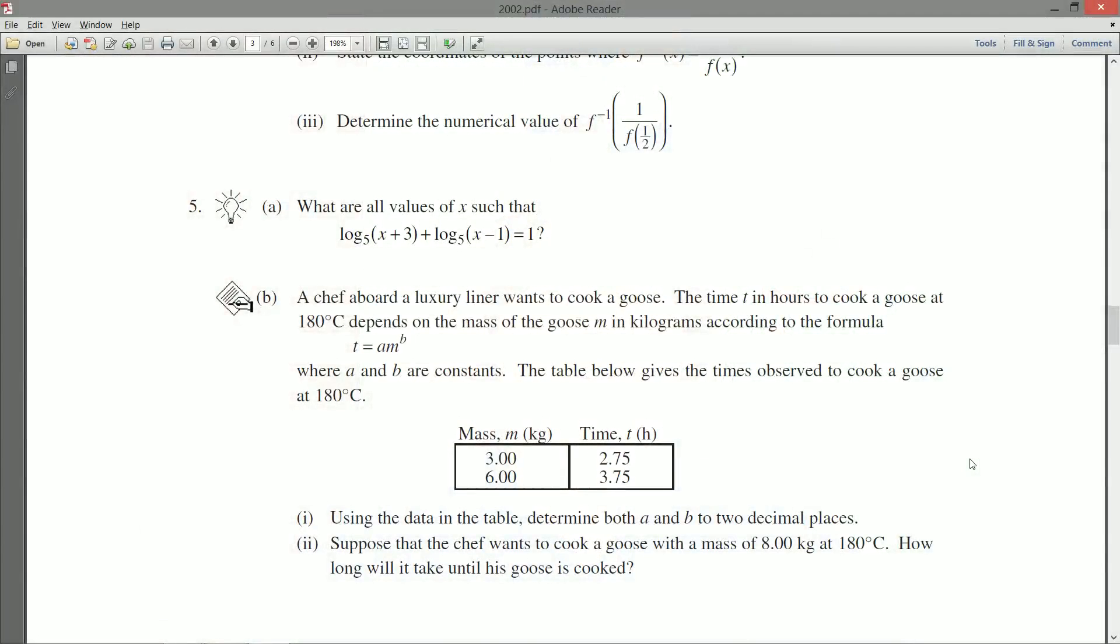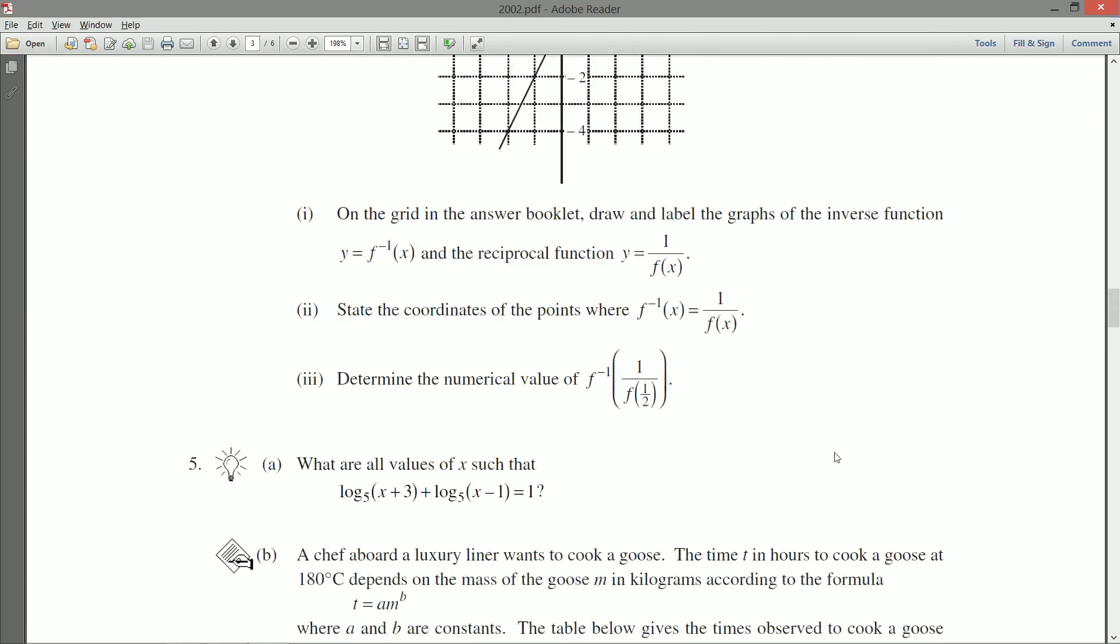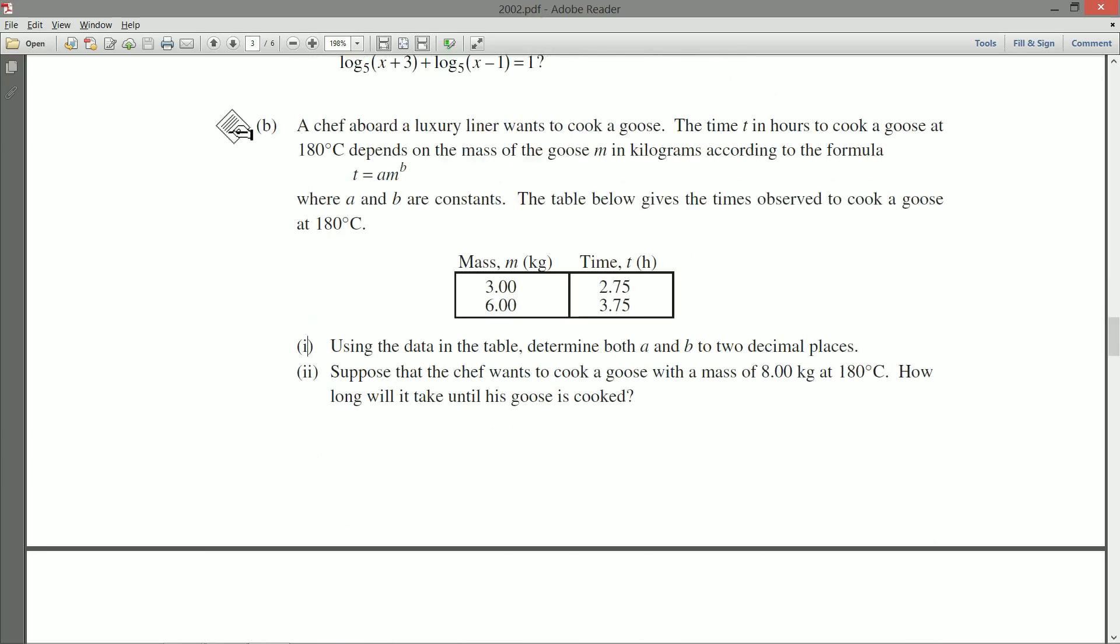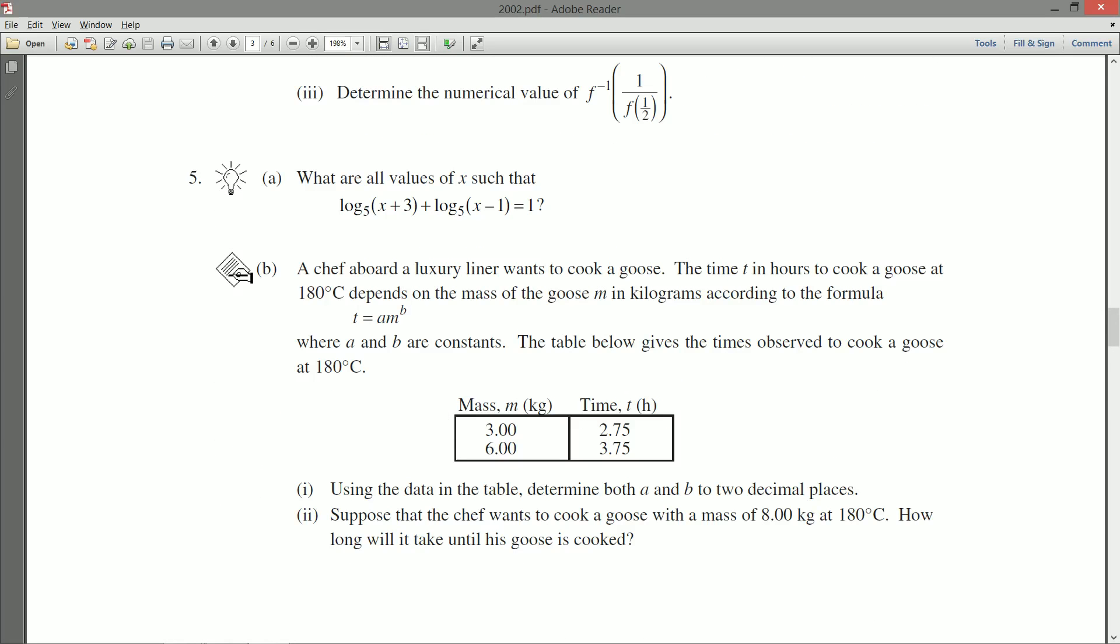That's the grade 12 written solution contest put out by the University of Waterloo, and hopefully you've been there for questions one through four. Here we're going to take a look at question number five. It's a two-parter, just like four was, although just like four, part B is trying to sneak a little extra past us.